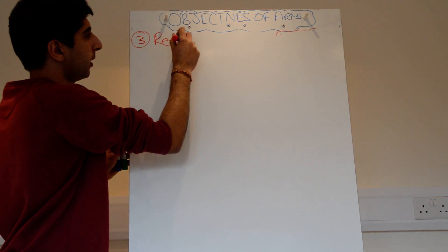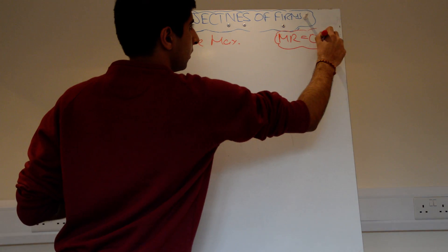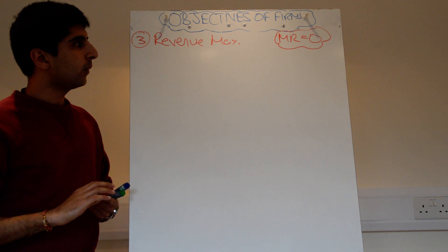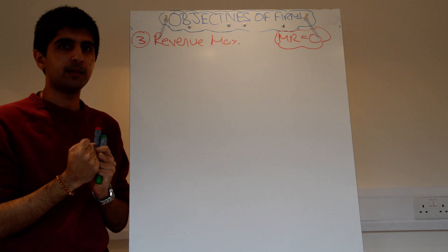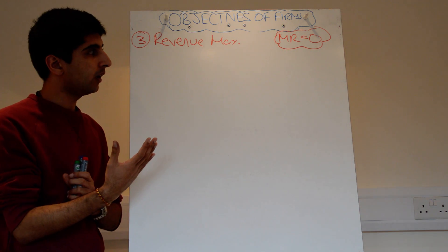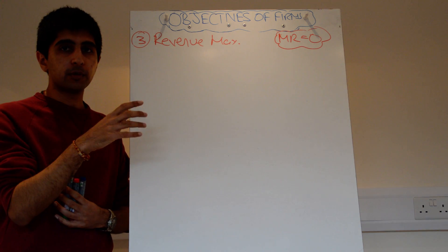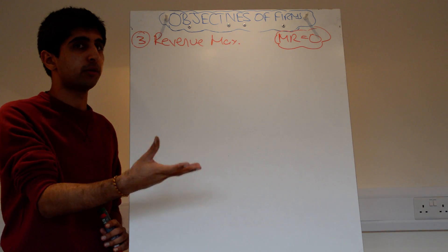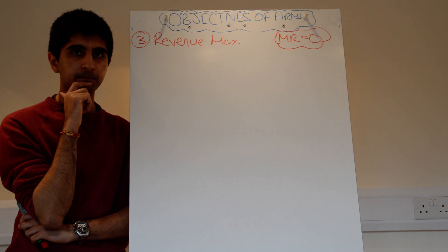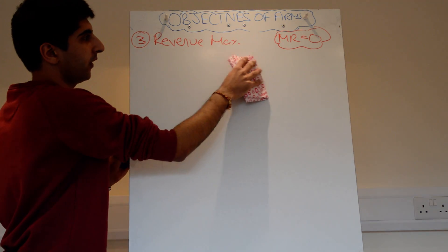Another objective for a firm might be to revenue maximise instead of profit maximise, and that occurs when marginal revenue is equal to zero. The main reason for that is to predatory price — to drive out competition in the market. By revenue maximising, the price charged by a firm will drop and the quantity produced will go up. By the price falling, that drives out competition and more consumers will go to that firm. A secondary reason is that as quantity increases, the firm might benefit slightly from economies of scale.